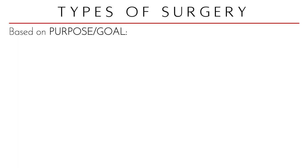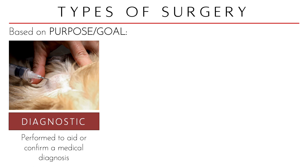Another way to classify surgeries would be based on the purpose or goal of that procedure. Some procedures are diagnostic in nature, meaning you only do the surgery to aid or confirm a medical diagnosis. We have a lot of techniques to diagnose animals: laboratory tests, physical examinations, diagnostic imaging like X-ray, ultrasound, CT scan, and MRI. However, there are times that these imaging techniques, however advanced, can still be not enough for you to reach a definitive diagnosis. That is why some surgeries are done to actually confirm your diagnosis — because you just have to see a certain tumor inside, so you have to open the patient up and see for yourself the morphological changes in that animal.